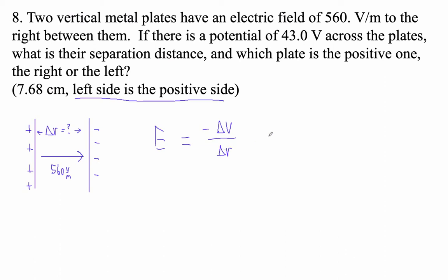Delta r is going to be the opposite of delta V over E. Do we even need the minus sign? I don't know, let's see what happens here. Okay, so let's say that I go to the right, that I displace myself in a positive delta r.